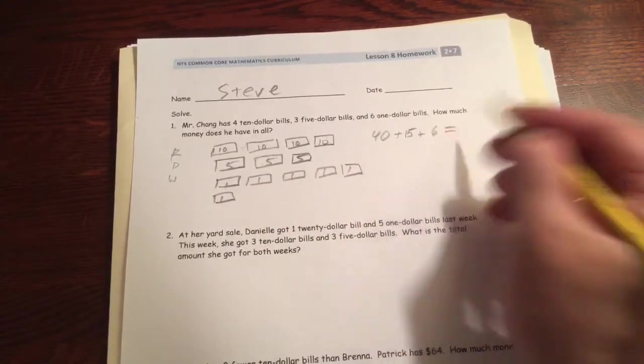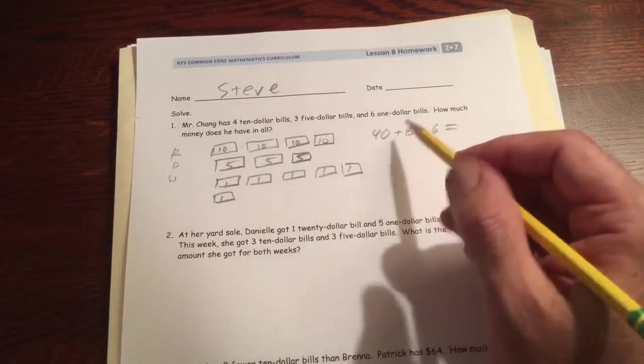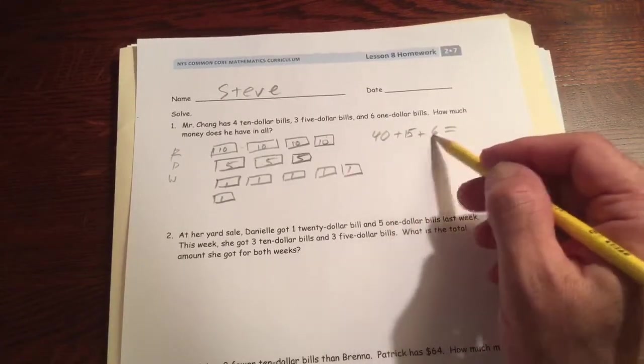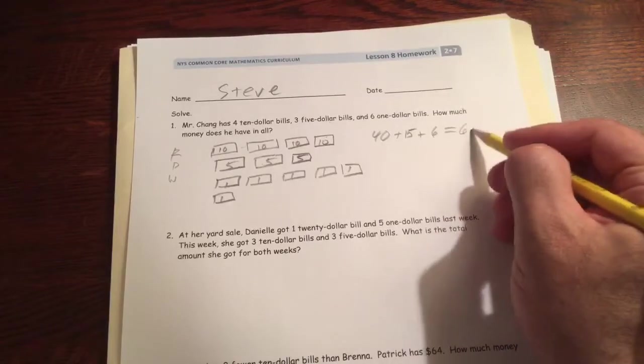You could add those together. 40 plus 15, that's 55. And six more, $61.